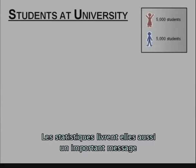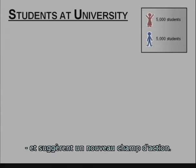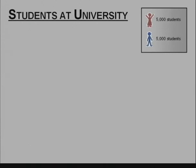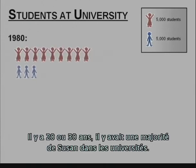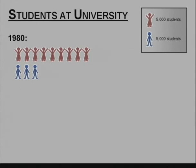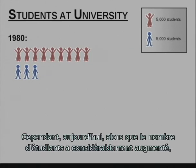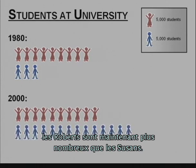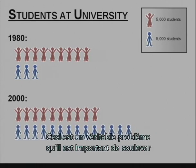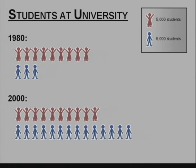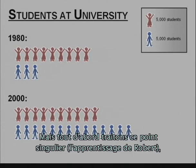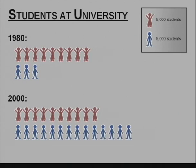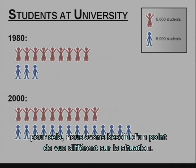The statistics also carry an important message and suggest a different course of action. 20 or 30 years ago, there were mostly Susans at the universities. Nowadays, however, as student intake has increased dramatically, the Roberts now outnumber the Susans. This makes for a considerable problem which is important to tackle for any responsible modern society. But before we deal with Robert's learning, we need to take a look at the situation from a different perspective.